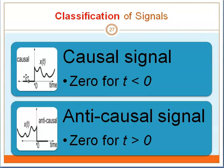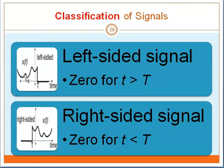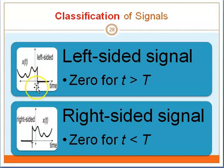An anti-causal signal will be the opposite of that. Next, we have left-sided signal versus right-sided signal. A left-sided signal is when you have a signal on the left-hand side. You will have 0 for T more than the period that is given to you. So everything that is on the right-hand side will be 0.